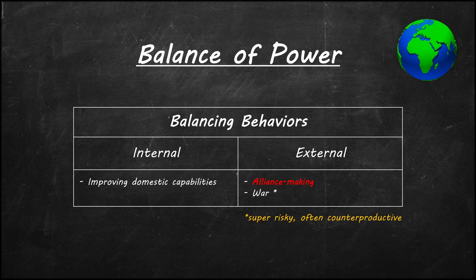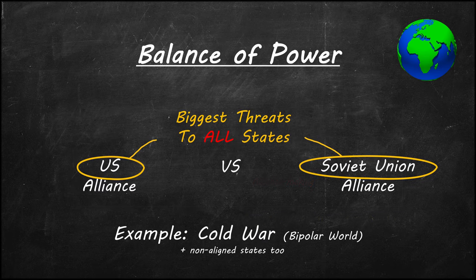Except for John Mearsheimer, but we don't talk about him here. In the balance of power theory, alliances are the preferred method of external balancing. When the world is composed of two superpowers, the balance of power anticipates the formation of two large alliance systems. The most obvious example is the Cold War, where many states in the world allied with either the United States or the Soviet Union. The key takeaway is that the two superpowers represent the biggest threat to all the states in the world because they are the most powerful.